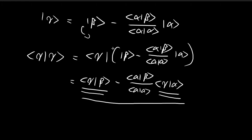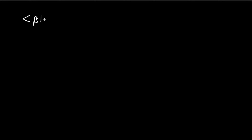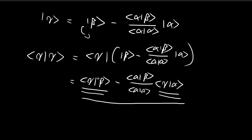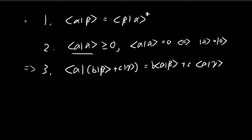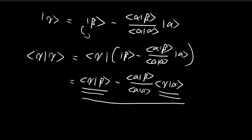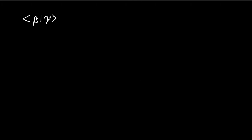In order to find the inner product of gamma with beta, I'm going to first find the inner product of beta with gamma. Once I find this, I can easily find the inner product of gamma with beta by just taking the conjugate — I can just use the first rule, take the conjugate, and that gives me the inner product of gamma with beta.